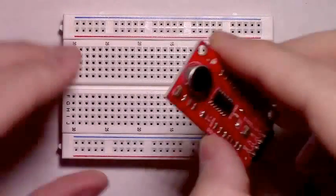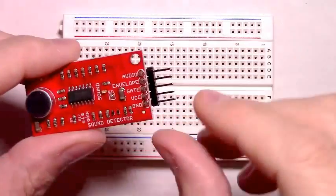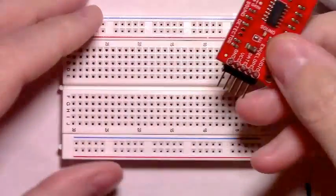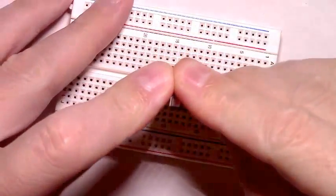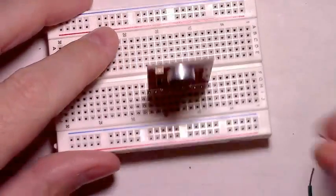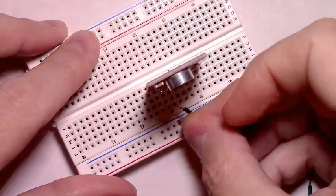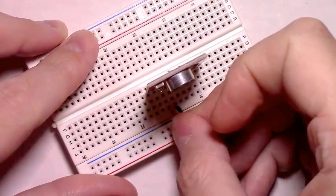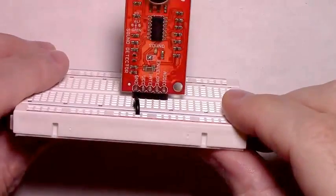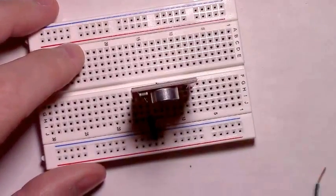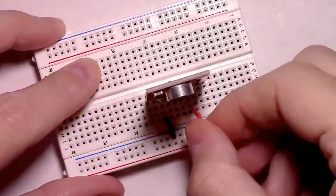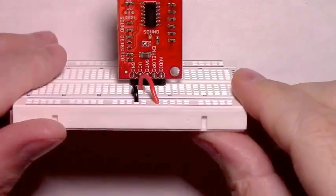Now for the Arduino and sound detection side. As I mentioned, all we're going to use is the ground, the VCC, and the envelope pin. And just take your sound detector, plug it into your breadboard like that. Then you can hook up the ground of the sound detector to the ground rail of your breadboard. And you can hook the VCC of the sound detector to the positive rail. That's all there is to it.